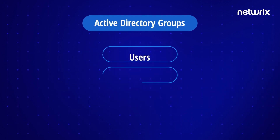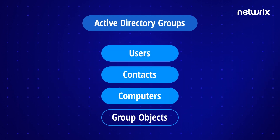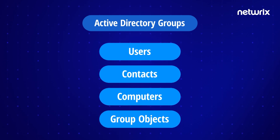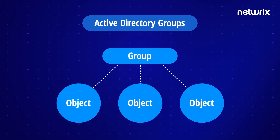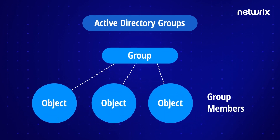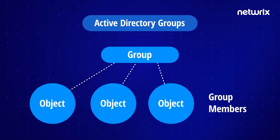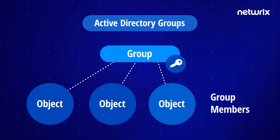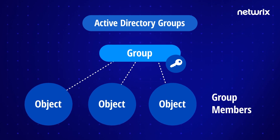A group is a method for collecting users, contacts, computers, and even other group objects so that you can manage the objects in that group as a single unit. Objects that belong to a particular group are referred to as group members. Using groups can simplify administration by assigning a set of permissions to a group once, rather than assigning permissions and rights to each group member individually.